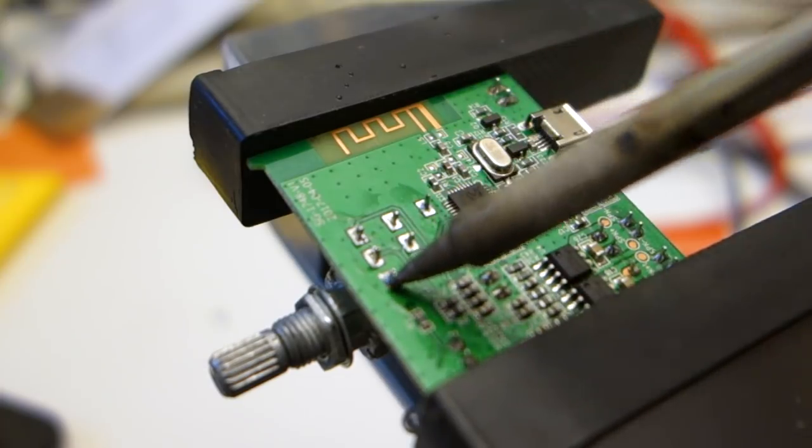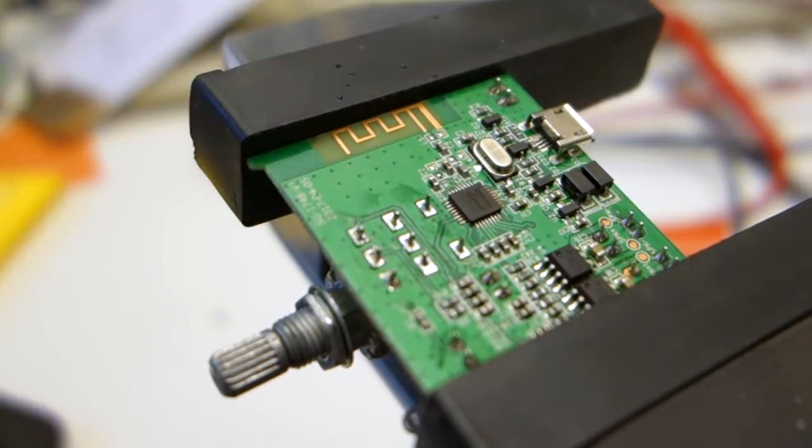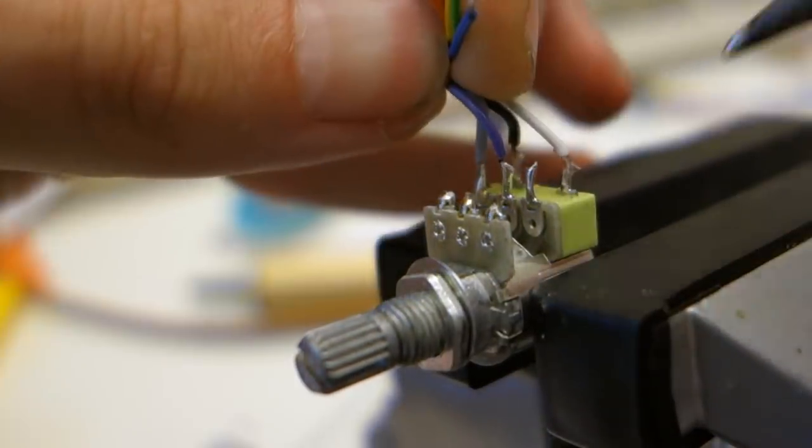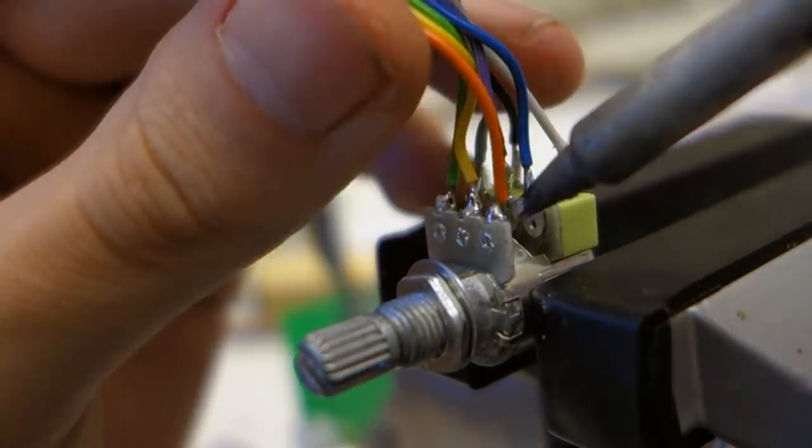Before installing everything into the enclosure we need to desolder and move the combined volume and on-off switch away from the circuit board and extend it with some wires to be able to use it from outside the enclosure.